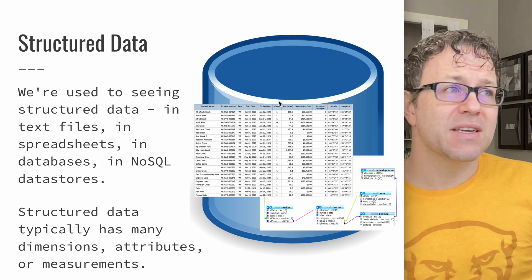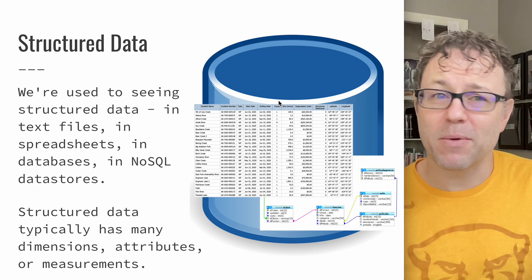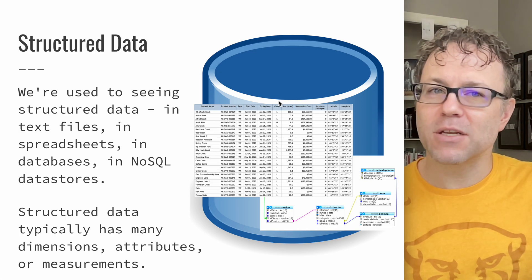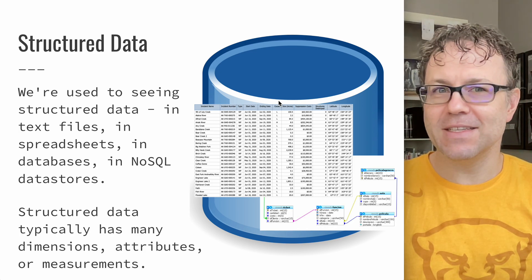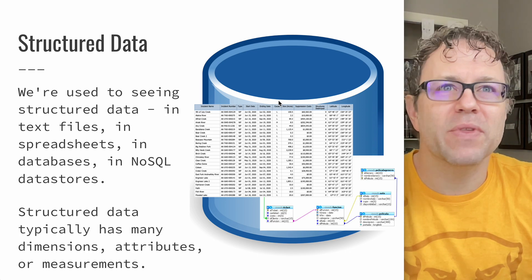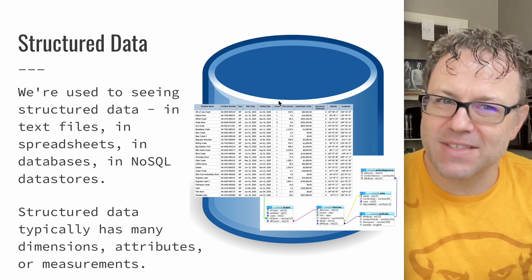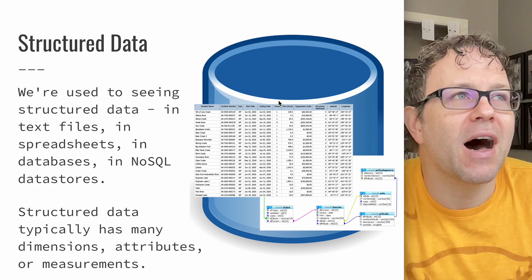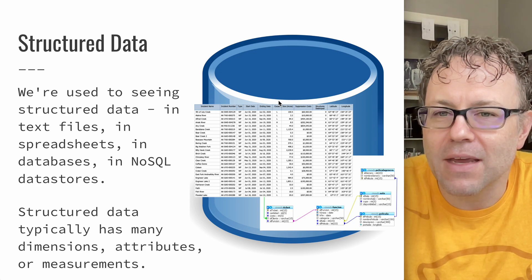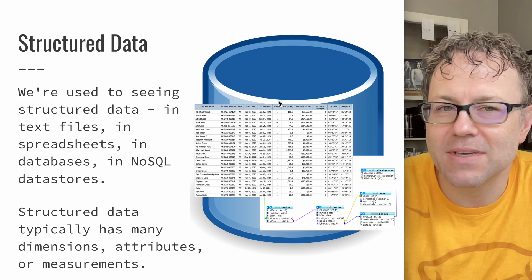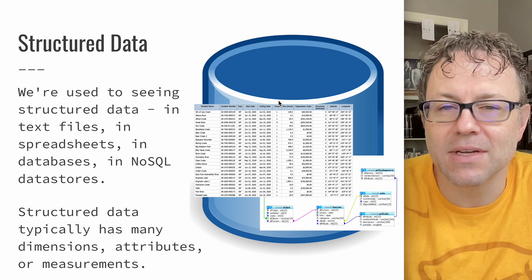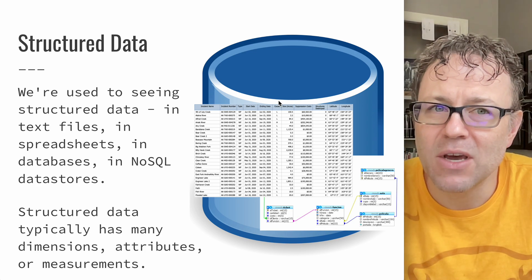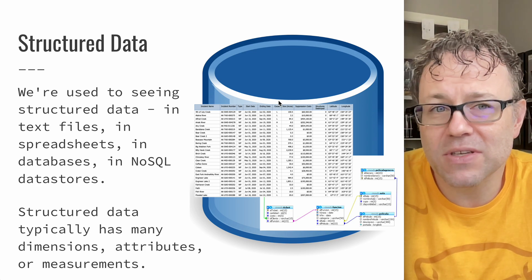Typically structured data is going to have dimensions, attributes, or some type of measurement. Depending on our context, we may call all of these different things. In data management terms, we tend to call these entities, and entities tend to have attributes. An entity is like a record, it's like a database entry. A database table is going to be tabular — it's going to have records, it's going to have columns, and the intersection of those records and columns are going to be fields, which will have some associations within that record and potentially to other tables.